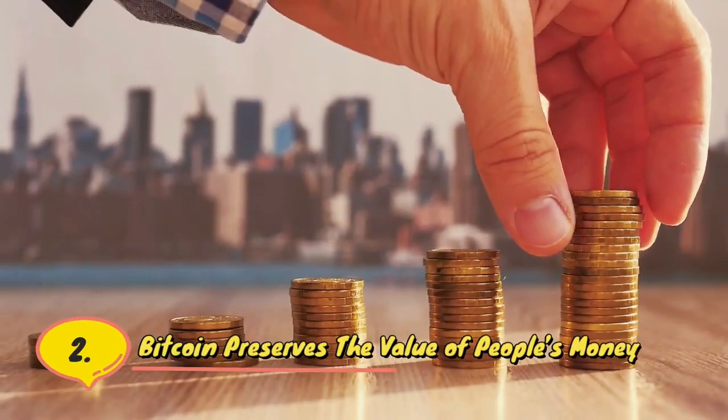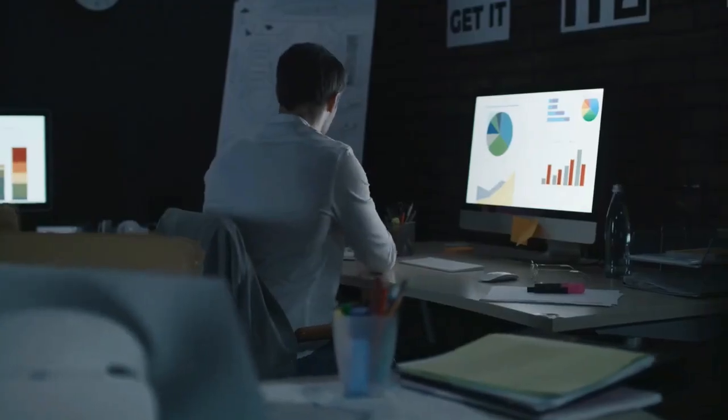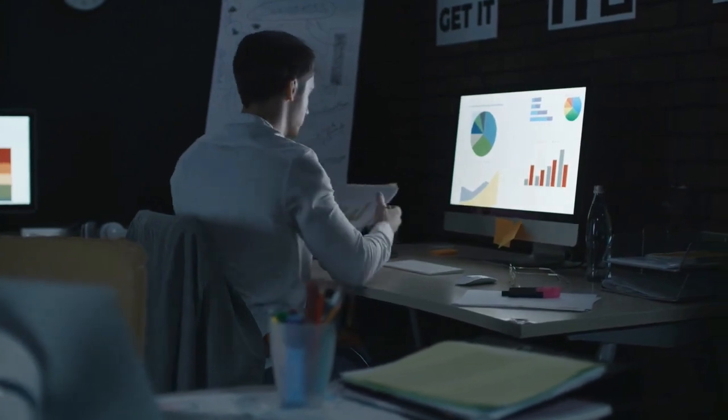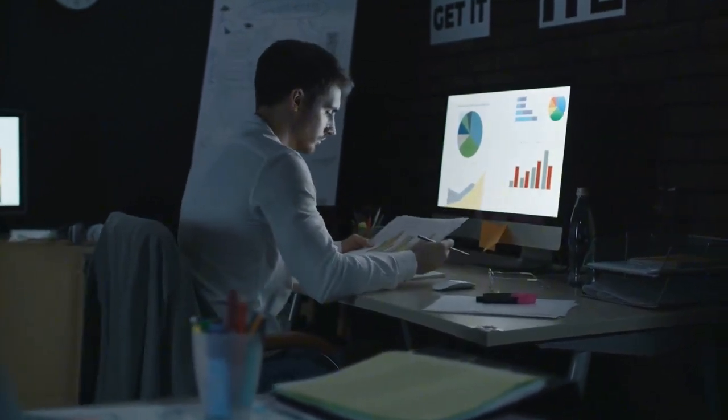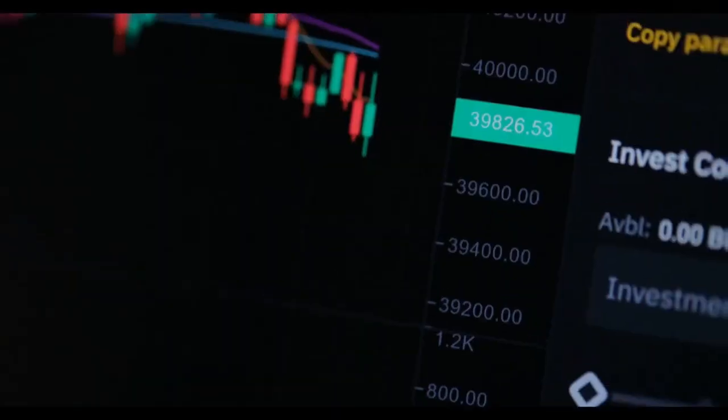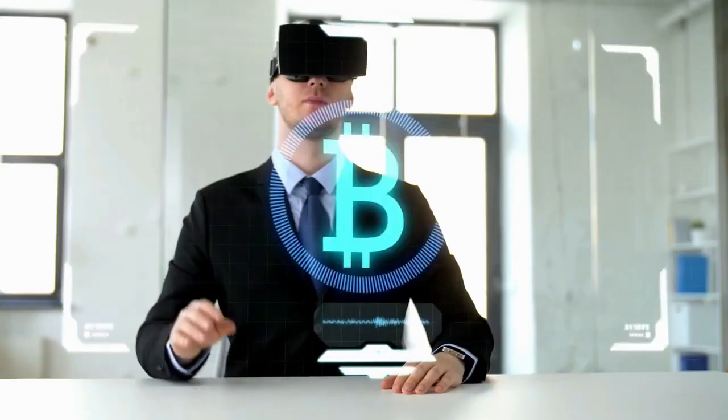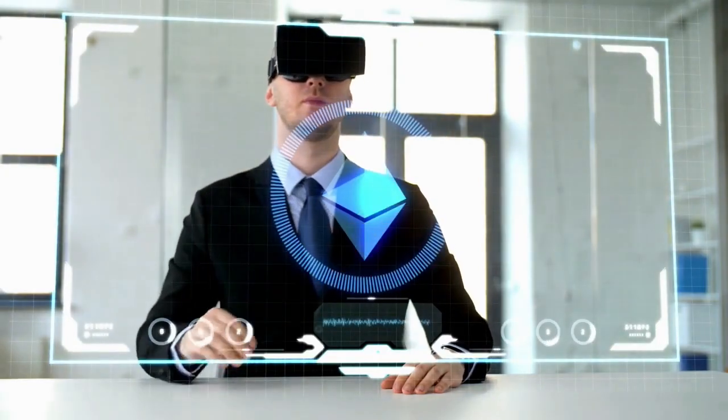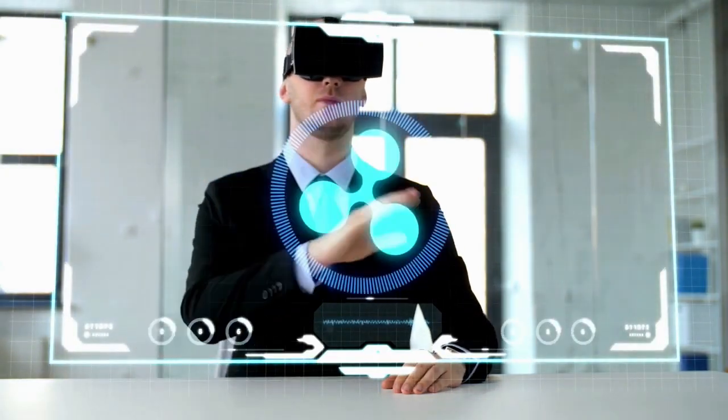Number two: Bitcoin preserves the value of people's money. We tend to see high Bitcoin use in countries that have seen the greatest destruction to their national currencies. Turkey, Venezuela, Argentina have all seen massive debasement of their national currencies through money printing. Bitcoin has provided citizens with a way to preserve the buying power of their money. But these countries are not alone. Many countries in the world are playing the money printing game, and that's one of the reasons Bitcoin is so promising long term.